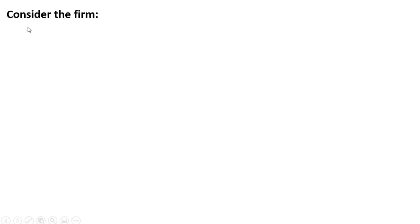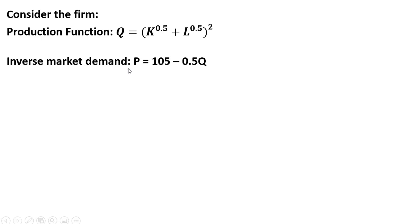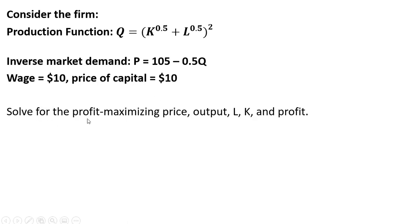Here's the setup. We have a firm who has the following production function. It faces an inverse market demand: price equals 105 minus 0.5Q. The wage is $10 and the price of capital is $10. We want to solve for the profit maximizing price, output, level of labor, level of capital, and profit.